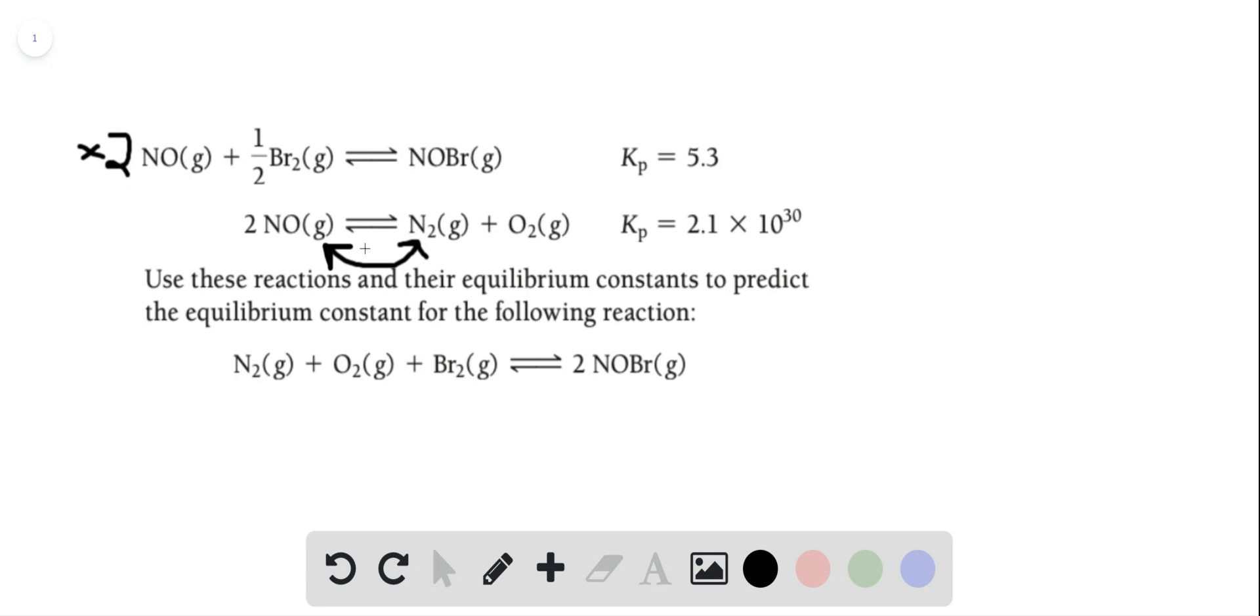Now what effect do these two manipulations have on the equilibrium constant? When we're doubling something, we raise the equilibrium constant to that power. So we're going to take this value and square it.